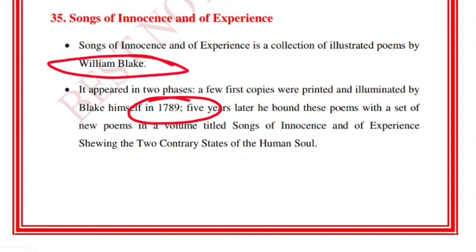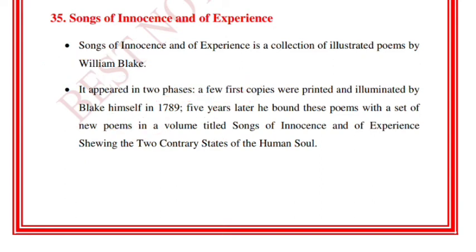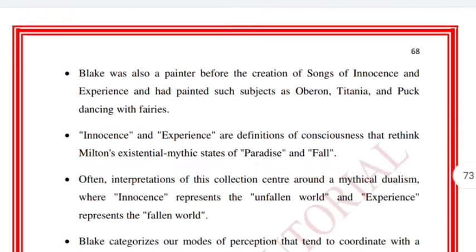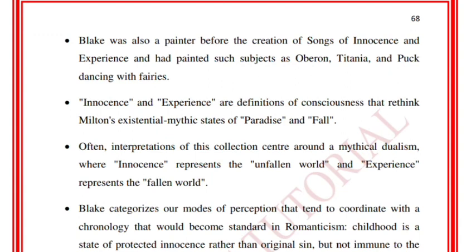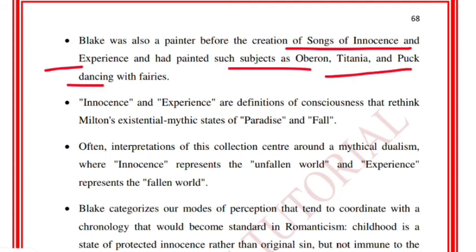William Blake is a transitional poet and can be called a precursor of Romanticism. Some literary historians even call 1789 the starting point of Romanticism, but for examination purposes we write 1790-1800. Blake was also a painter before the creation of Songs of Innocence and Experience and had painted subjects such as Oberon, Titania, and Puck dancing with fairies.